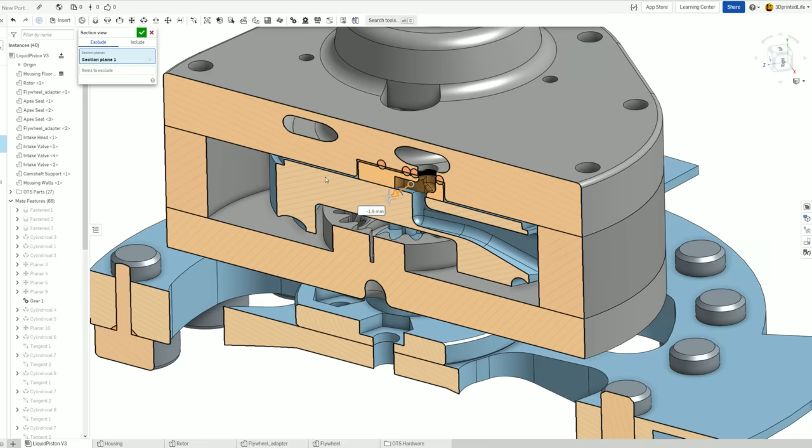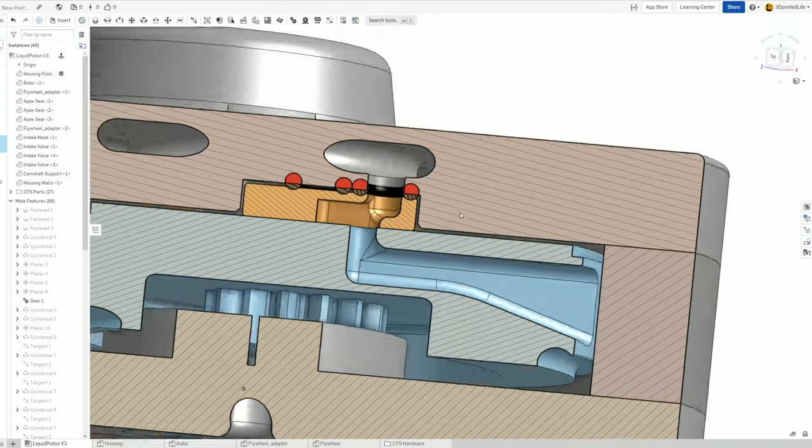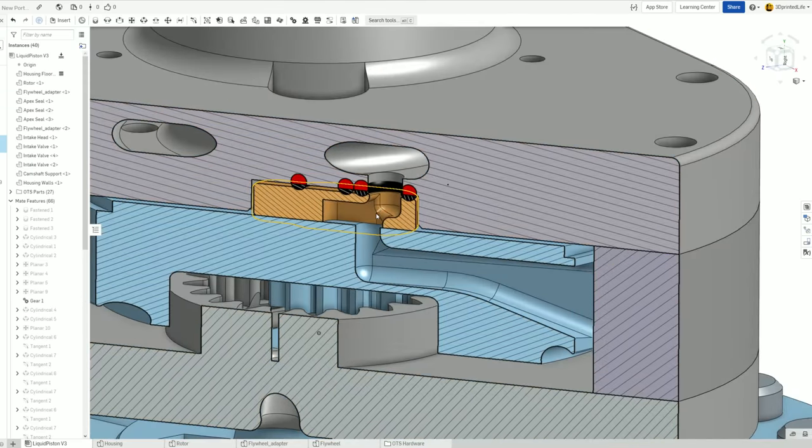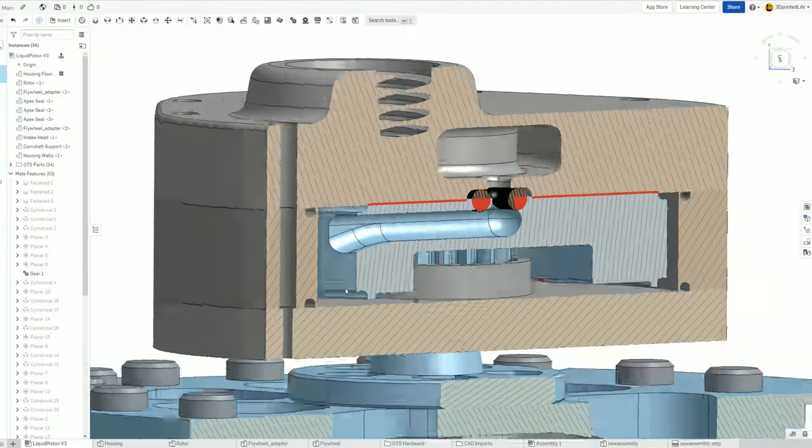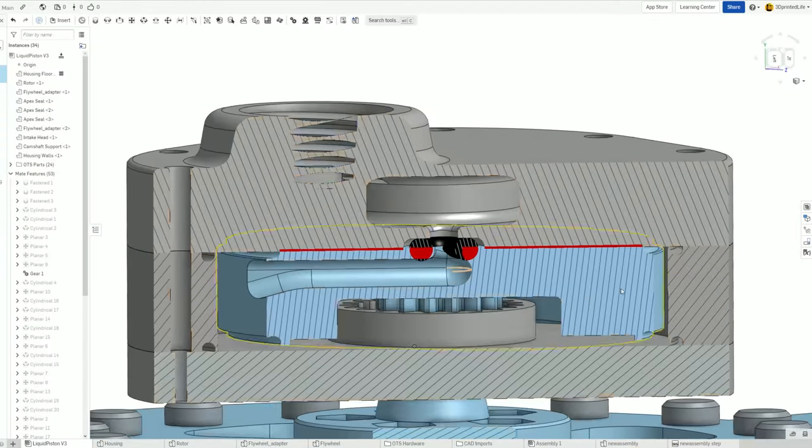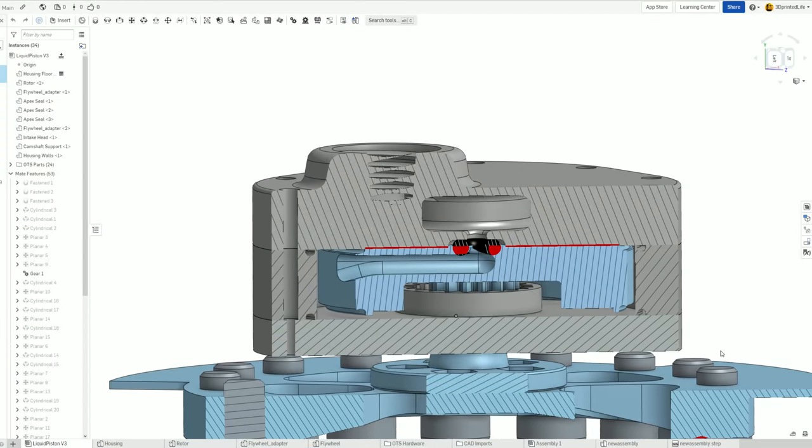This old design had an intake diameter of only 1.5mm, which is tiny, and it had this very torturous path. The new design would be 2.2mm, and a much simpler path. So how much better would that actually be?